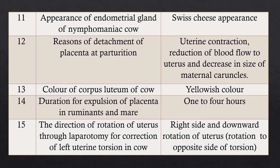Question 12: Reasons for detachment of the placenta at the time of parturition. Answer: The first reason is uterine contraction. The second is reduction of blood flow to the uterus. The third reason is decrease in size of maternal caruncles. All three reasons together expel the placenta from the uterus.